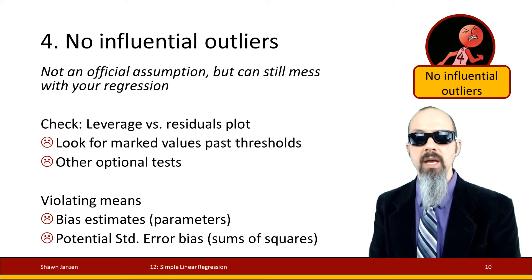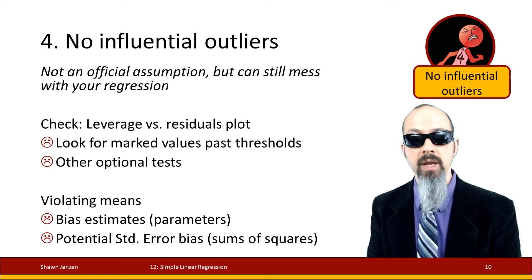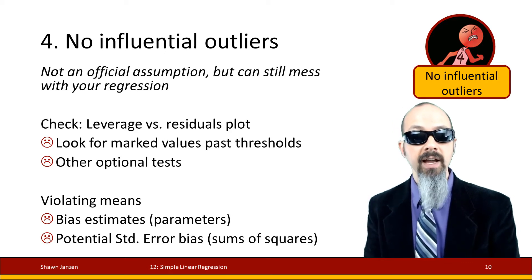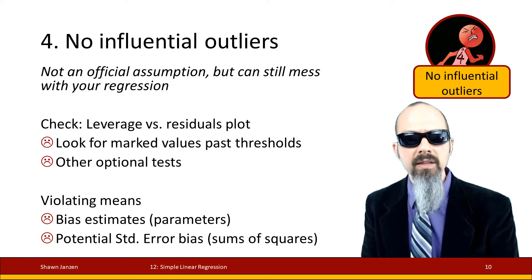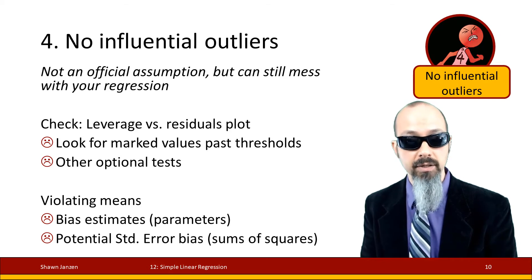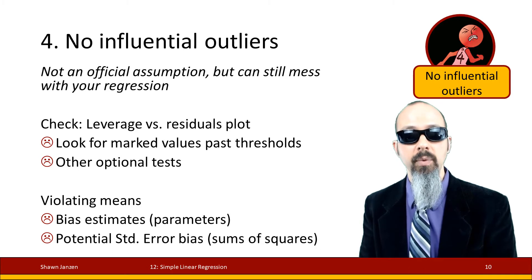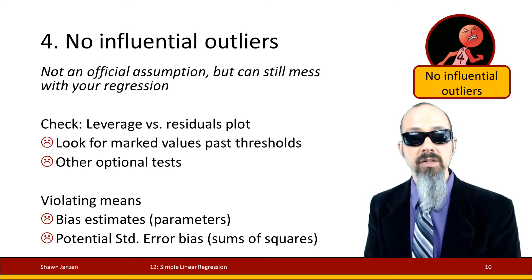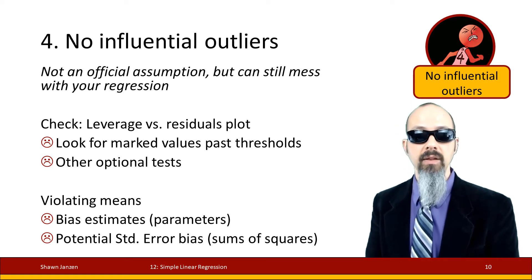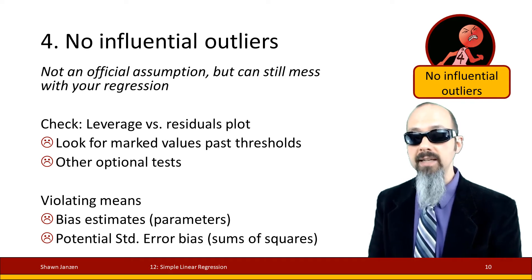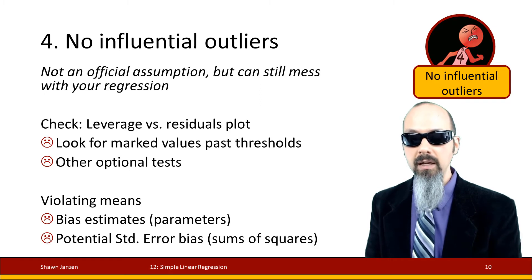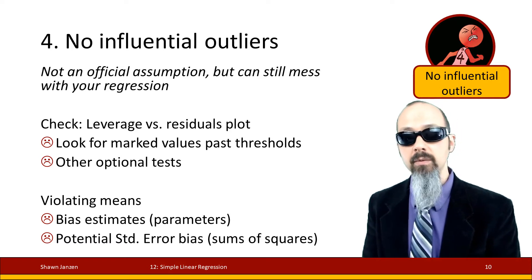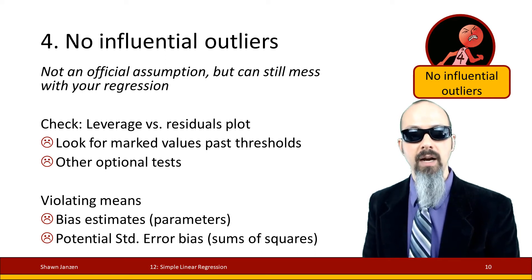The fourth assumption is no influential outliers — not an official assumption but outliers can still mess with regression. There's a difference between regular outliers and influential outliers. We find influential outliers using a leverage versus residuals plot, which will clearly mark which observations exceed influential thresholds. Violating this assumption could produce biased parameter estimates and biased standard errors, meaning the regression line is not ideally positioned through your data points.